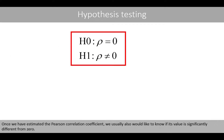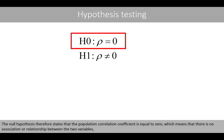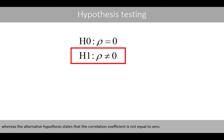Once we have estimated the Pearson correlation coefficient, we usually also would like to know if its value is significantly different from zero. Note that the population correlation coefficient is usually denoted by the Greek letter rho. The null hypothesis states that the population correlation coefficient is equal to zero, which means that there is no association or relationship between the two variables.